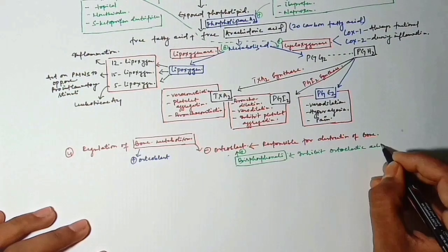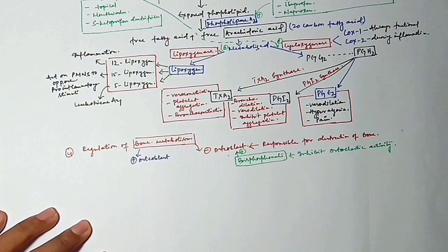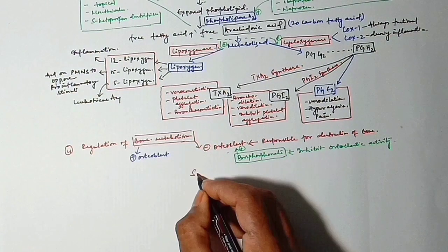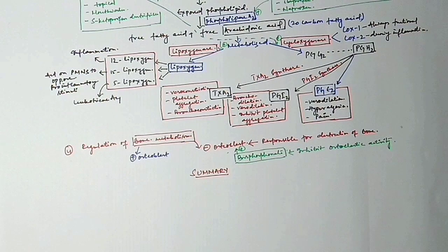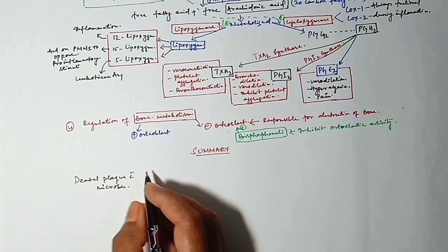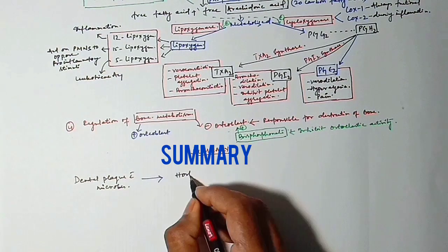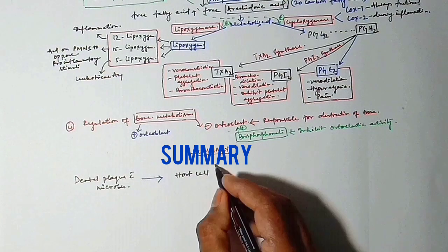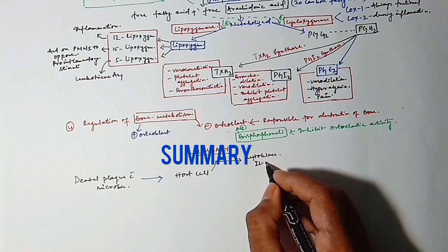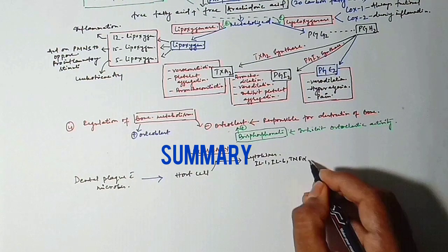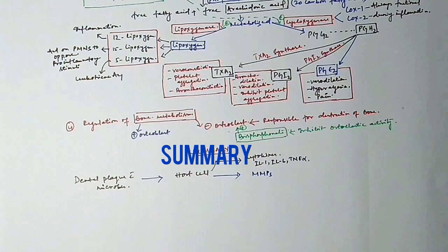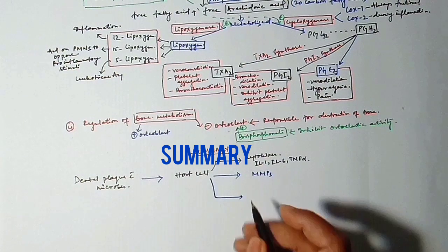Let's summarize this. Dental plaque and microbes will lead to host cell which will show the response or host response. As a host response it will give rise to cytokines, that is interleukins 1, interleukins 6 and TNF alpha or tumor necrosis factor alpha and MMPs, and they will give rise to PGE2. PGE2 will give rise to the osteoclastic activity.